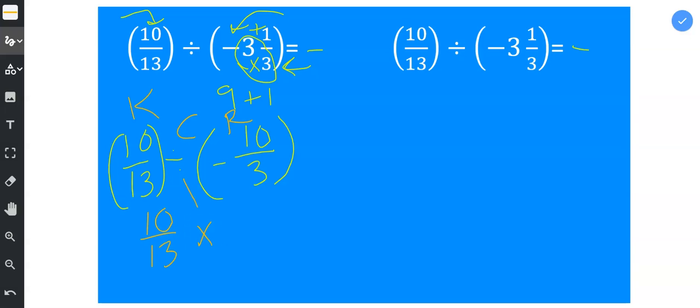I change the division to multiplication, and then I write the reciprocal of the second fraction. So basically, you flip the second fraction. You trade the numerator and the denominator.